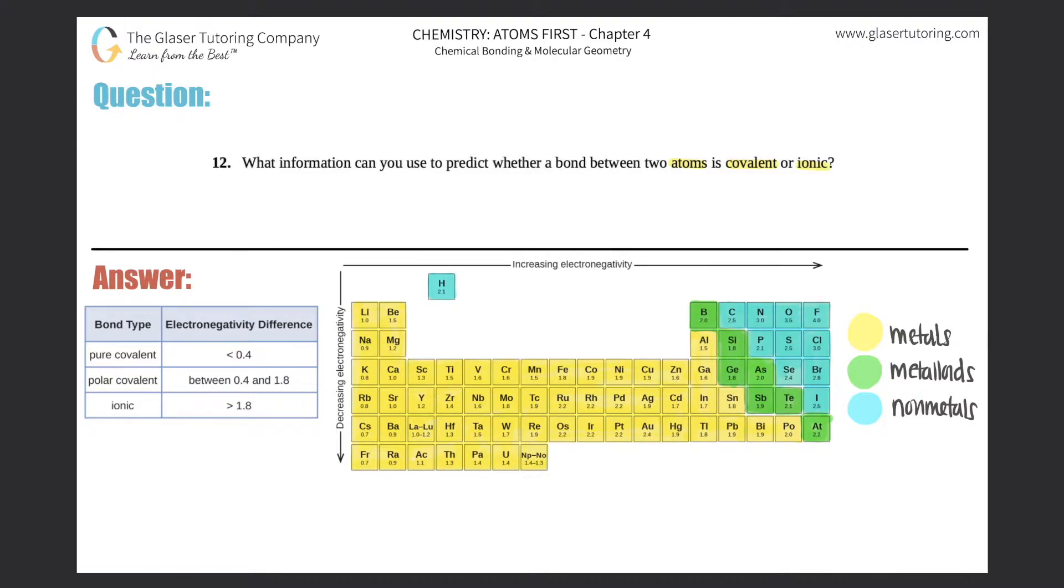Okay, so remember the general definitions of whether two atoms come together as covalent molecules or ionic compounds. Covalent molecules come about when you have two or more non-metals interacting with each other.